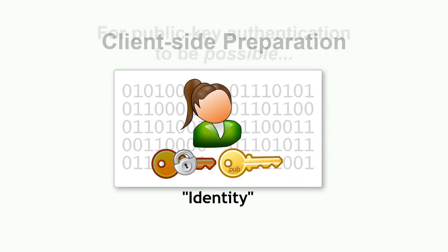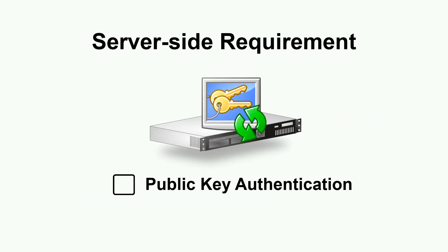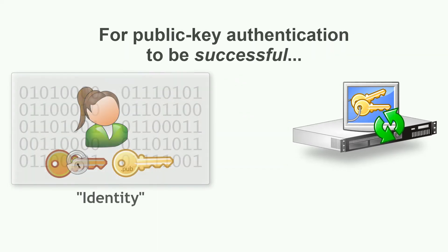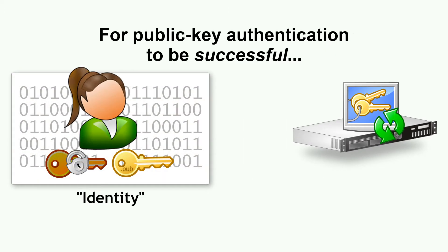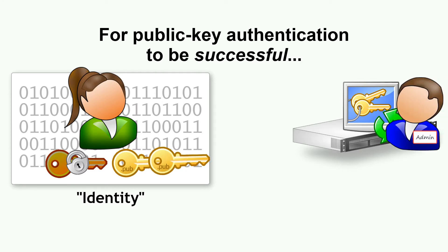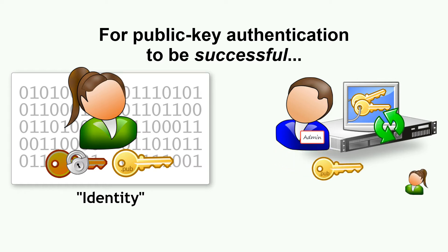For Public Key authentication to be possible, a Secure Shell server must first be configured to allow the Public Key authentication method. For it to be successful, the operator of the Secure Shell client will need to send their Public Key to the server administrator, who then configures the server to allow that Public Key for authentication, associating it with a specific user account.